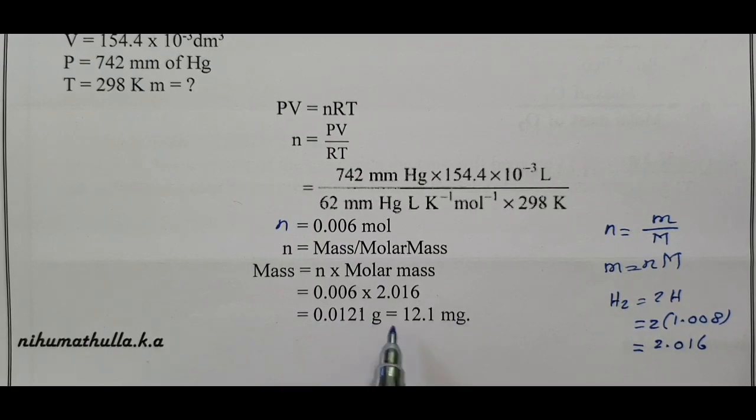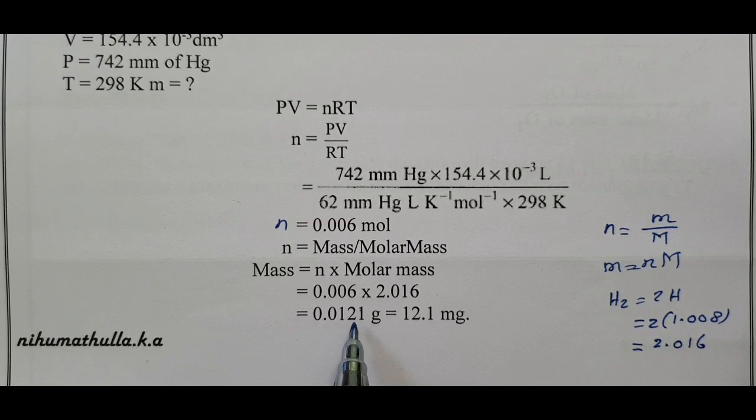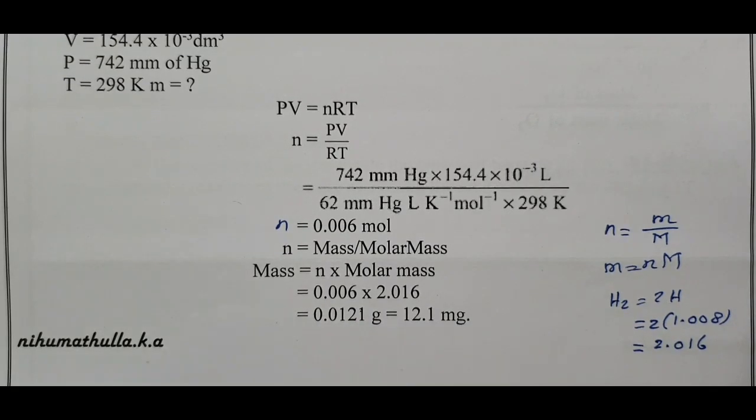Multiplying gives 0.0121 gram. To convert to milligram, multiply by 10 power plus 3, which gives 12.1 milligram. This is Question Number 50.